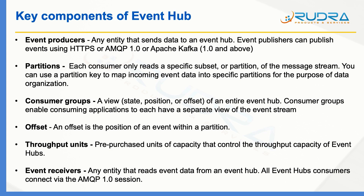The second key component is partitions. Each consumer only reads a specific subset or partition of the message stream. You can use a partition key to map incoming event data into specific partitions for the purpose of data organization. For example, you can ingest temperature data, vending machine sensor data, and coffee machine sensor data into the same Event Hub but with a different partition key, and Event Hub will place each event into the appropriate partition.